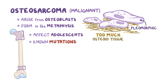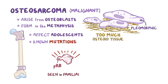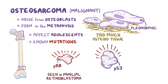Some known mutations linked to osteosarcomas include mutations of the PRB protein, also seen in familial retinoblastoma — a childhood malignant tumor of the eye — and the p53 protein, which is also seen in Li-Fraumeni syndrome, a condition where there are a variety of cancers throughout the body.